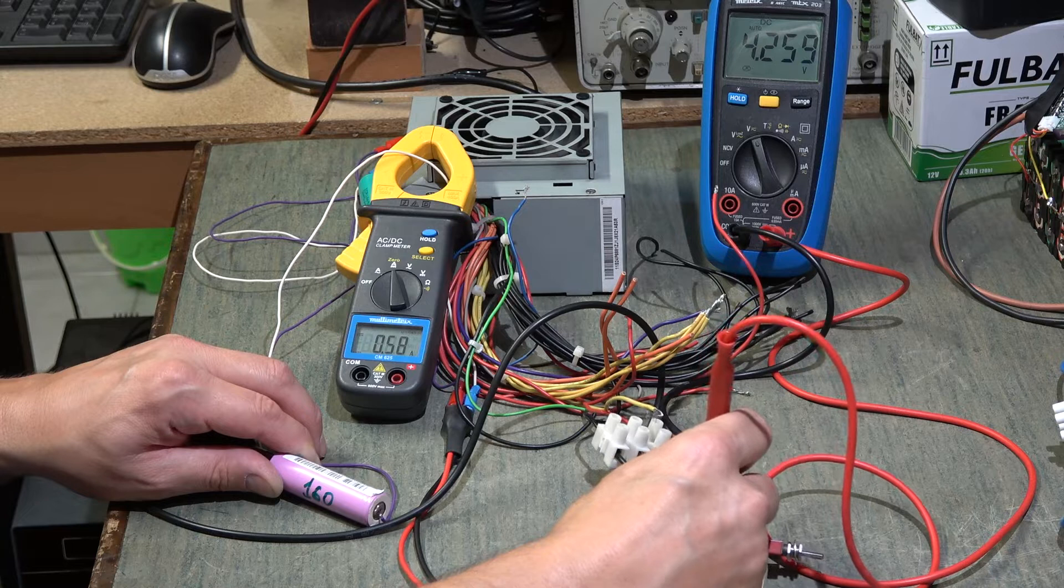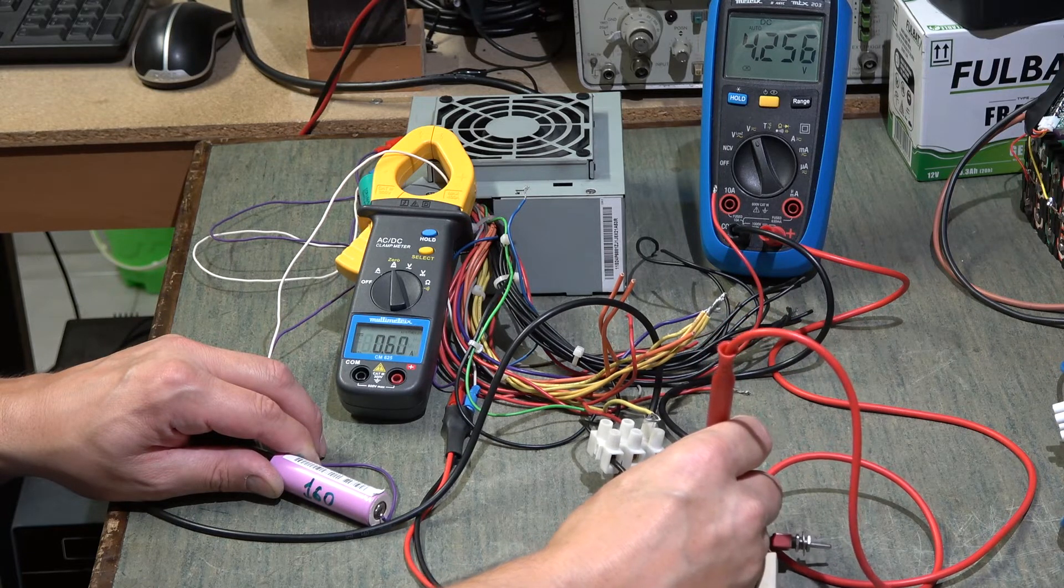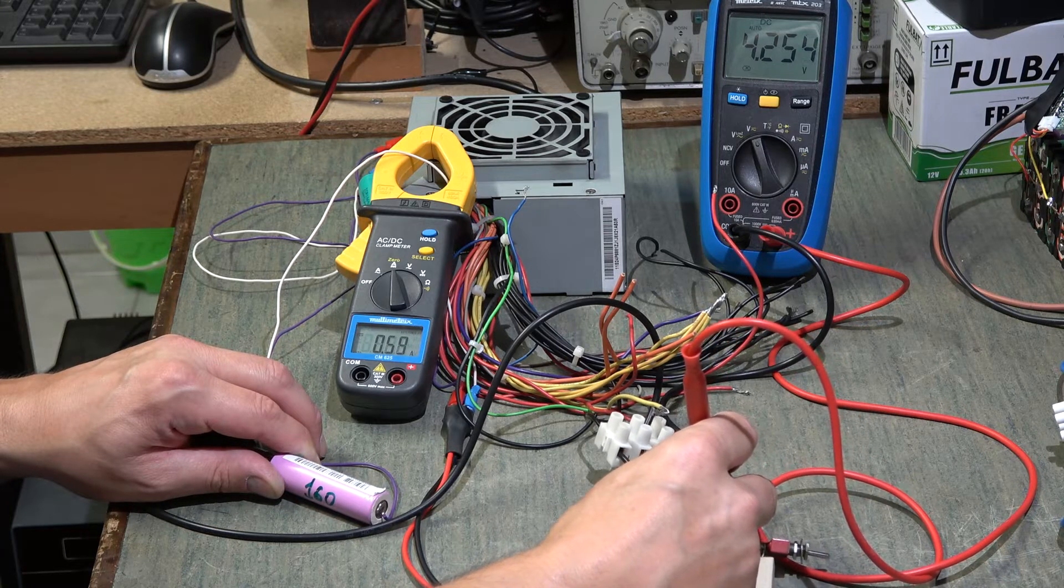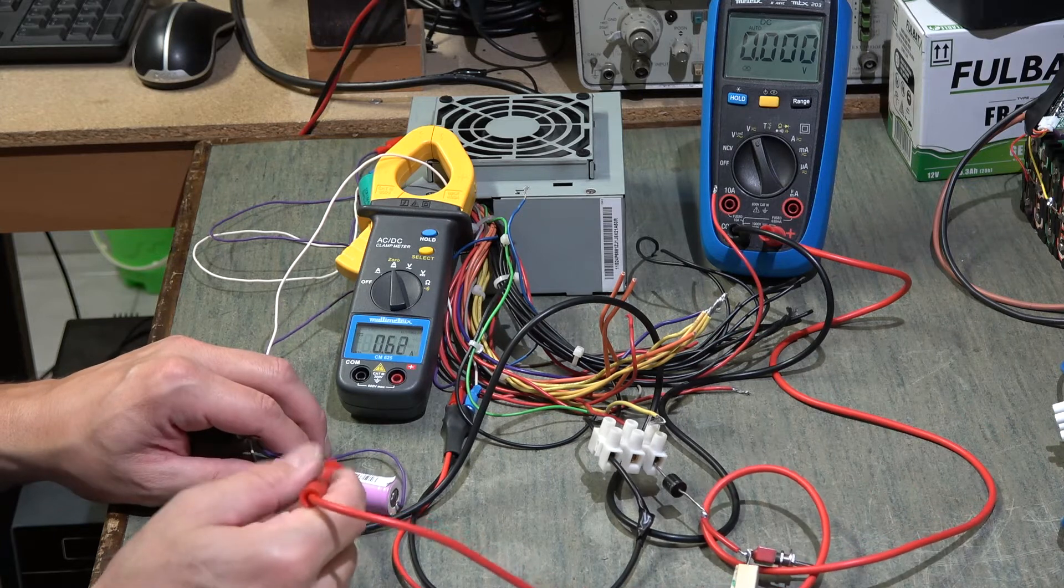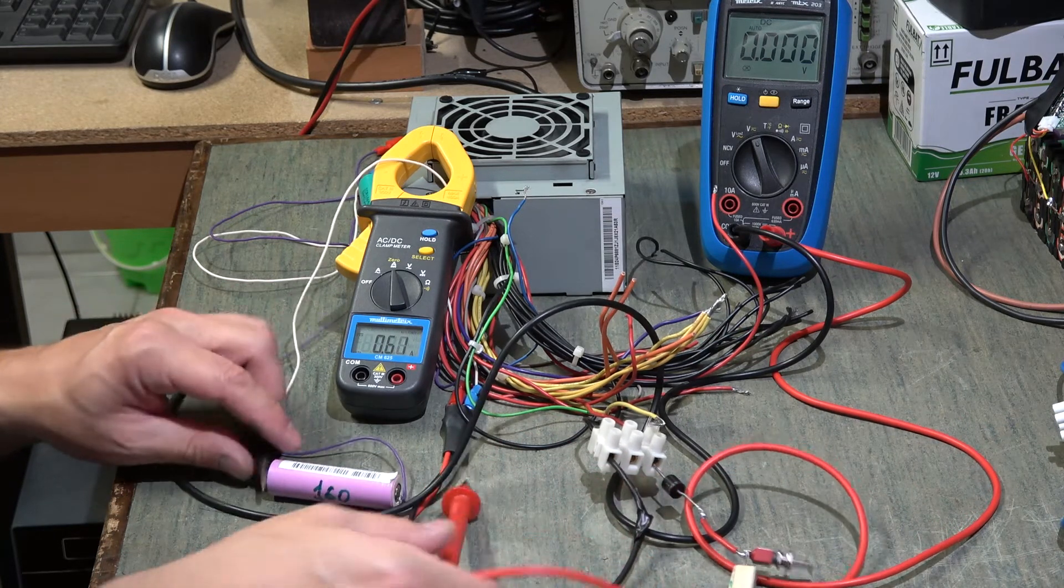Here at the diode we always have our 4.2 volts because the diode cuts the peaks of the wave. It does not go to survive 4.2 volts - this battery will never reach more than 4.2 volts.